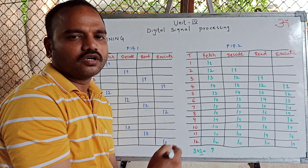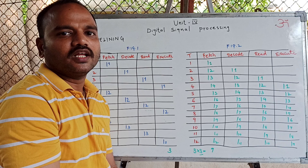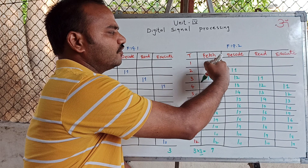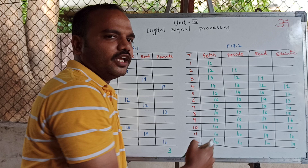Apart from improvement in efficiency, the pipeline processor has 2 limitations or drawbacks. The first one is latency. That is, the first instruction is executed after 4 units of time. If an instruction cycle consists of 4 phases, then after 4 clock pulses the first instruction will be executed.